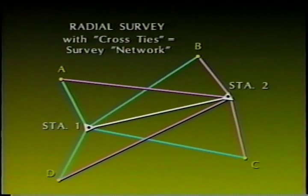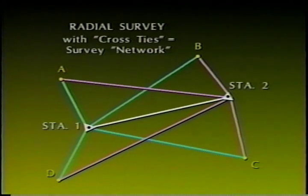Cross-ties and additional measurements made in a network provide the redundancy needed for least squares adjustments. In completing our review of the various types of traverses, it is apparent that for each survey, there are many options for the types of traverses and/or combinations of traverses the surveyor can choose from.